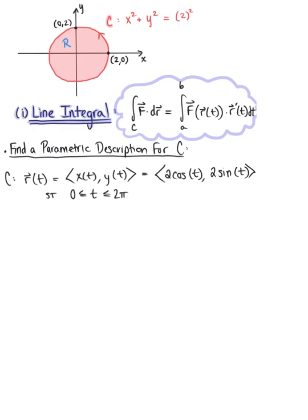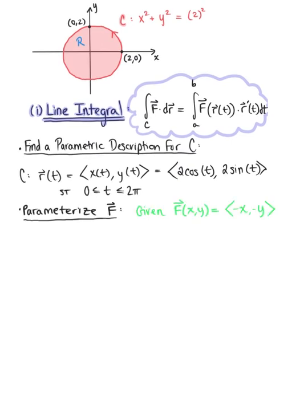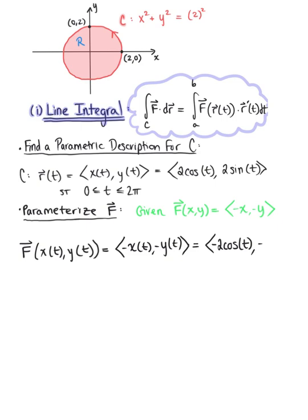Next, we parametrize the vector field by replacing x and y with x(t) and y(t), giving the vector with components (−x(t), −y(t)). Plugging in the parametric components, we get the vector (−2cos(t), −2sin(t)). Pulling out the scalar multiple of 2, we have 2 times the vector (−cos(t), −sin(t)).